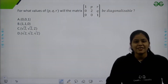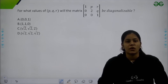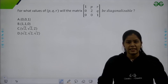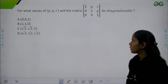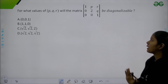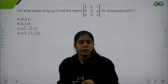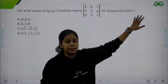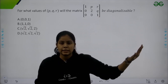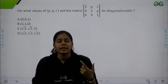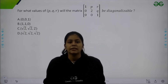Hello everybody. In this video we are going to discuss a question on diagonalizability in linear algebra. The question is: for what values of P, Q, R is the matrix diagonalizable? This matrix is of order 3×3, and for diagonalizability, if a matrix is of order 3×3, it needs 3 independent eigenvectors to be diagonalizable, otherwise not.